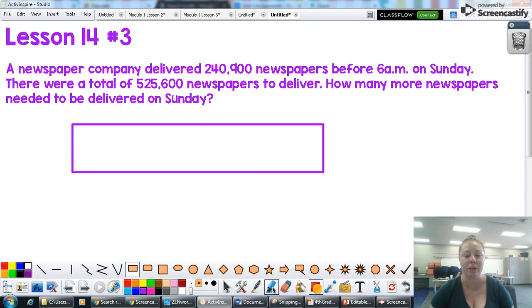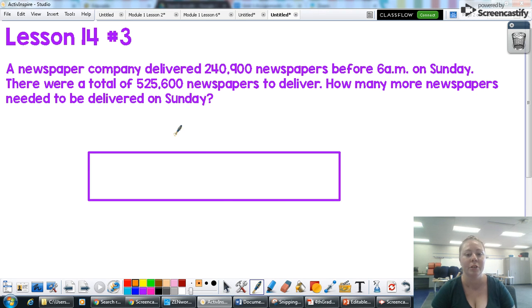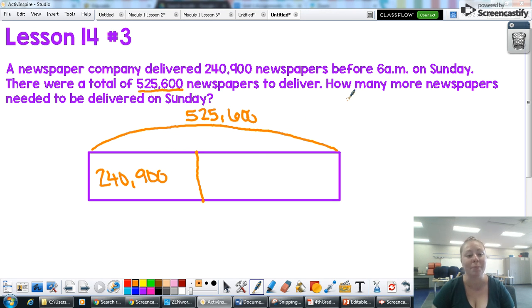Okay. So here is my rectangle. I might actually want to move that down just a little bit. Okay. So I know the total number of newspapers that needs to be delivered for the day is 525,600. So this whole thing is worth 525,600. Okay. It says that 240,900 have been delivered so far. I think that sounds like a little less than half. So I'm going to put it right here. I'm going to call this part 240,900. And the question is how many more newspapers need to be delivered. So I'm going to use that as a variable and I'm going to mark that as a. So I know the problem that I need to solve this problem is 525,600 minus 240,900 equals a.